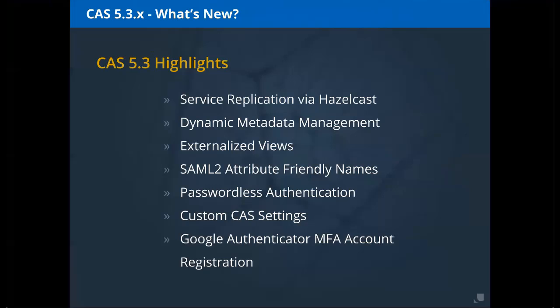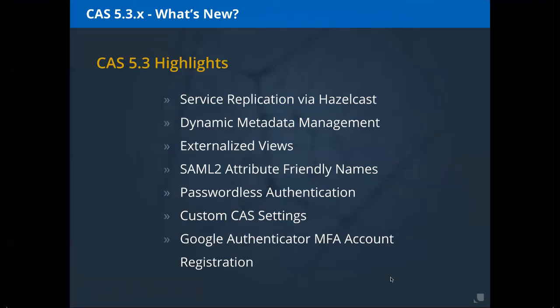CAS 5.3 major feature highlights: service replication via Hazelcast, allowing service JSON or YAML files to be distributed without keeping them locally. Dynamic metadata management supporting the MDQ protocol, with metadata storable in Mongo, SQL, Groovy, S3/Amazon, or REST. Externalized views — CAS UI templating (Thymeleaf) can now live outside the repository, making it much easier to customize without always rebuilding CAS.